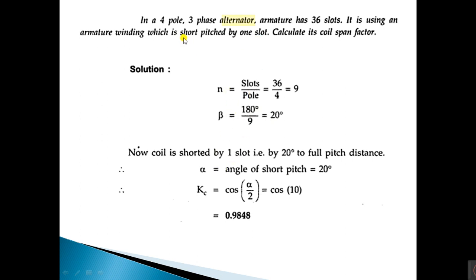The coil is shorted by one slot, so multiply 1 by 20 degrees — that is the full pitch distance, making alpha equal to 20 degrees. Apply that alpha value in the formula: kc = cos(α/2) = cos(10°), giving a coil span factor of 0.9848.